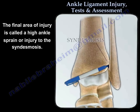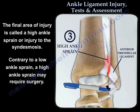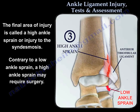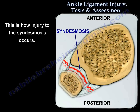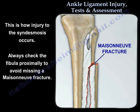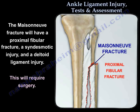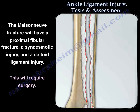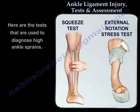The final area of injury is called a high ankle sprain, or injury to the syndesmosis. Contrary to a low ankle sprain, a high ankle sprain may require surgery. Always check the fibula proximally to avoid missing a Maisonneuve fracture. The Maisonneuve fracture will have a proximal fibular fracture, a syndesmotic injury, and a deltoid ligament injury, and it will need surgery.